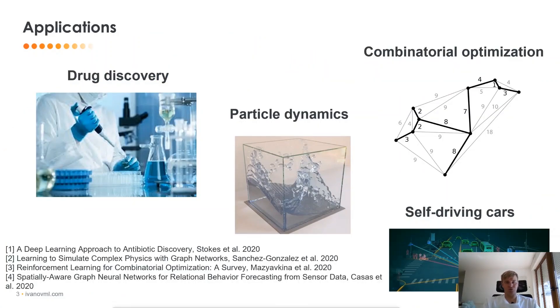Now, let's talk about applications or some success stories of graph neural networks in the last years. First of all, we have seen that we can apply GNN to develop new drugs, new medicine, and new antibiotics.